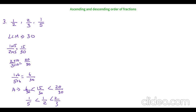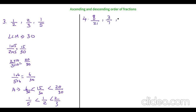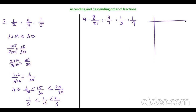Now let's do another example — our fourth example for today, which is also an unlike fraction: 8 by 21, 3 by 7, 1 by 3, and 1 by 9. Here we have 4 different numbers and all are unlike fractions — neither the denominator nor the numerator is the same. Let's quickly find the LCM using the prime factorization method because 21, 7, 3, and 9 all have some common divisors.